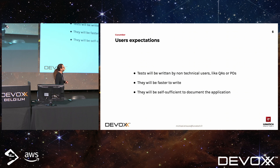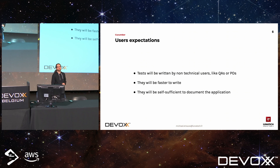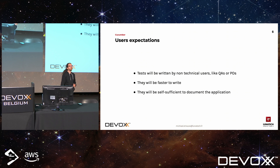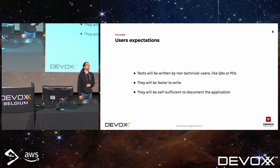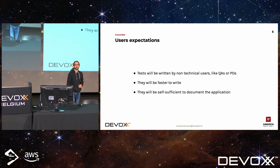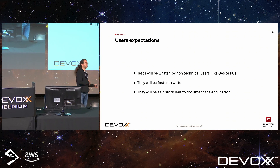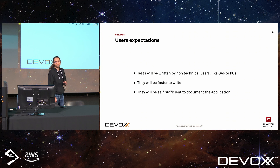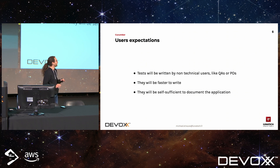When talking about a BDD automatic test framework with natural language, user expectations go through the roof. I've seen three common ones. The first is that tests will be written by non-technical users like quality assurance or product owners — since it's natural language, there's no code involved, so you don't need a developer. They will also be faster to write, because anyone knows that code is slow to write. And they will be self-sufficient to document the application, since they are regular sentences describing what happens.